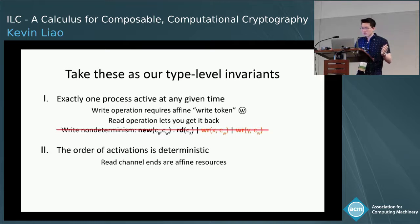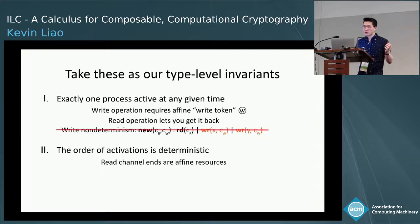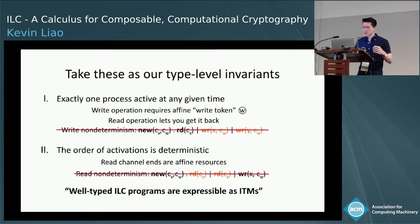To enforce that the order of activations is deterministic, we turn read channel ends into affine resources so they can't be duplicated. This ensures every write operation corresponds to a single, unique read operation. Programs where two processes share the same read channel don't type-check, which in effect eliminates read non-determinism. Roughly speaking, well-typed ILC programs are expressible as interactive Turing machines.